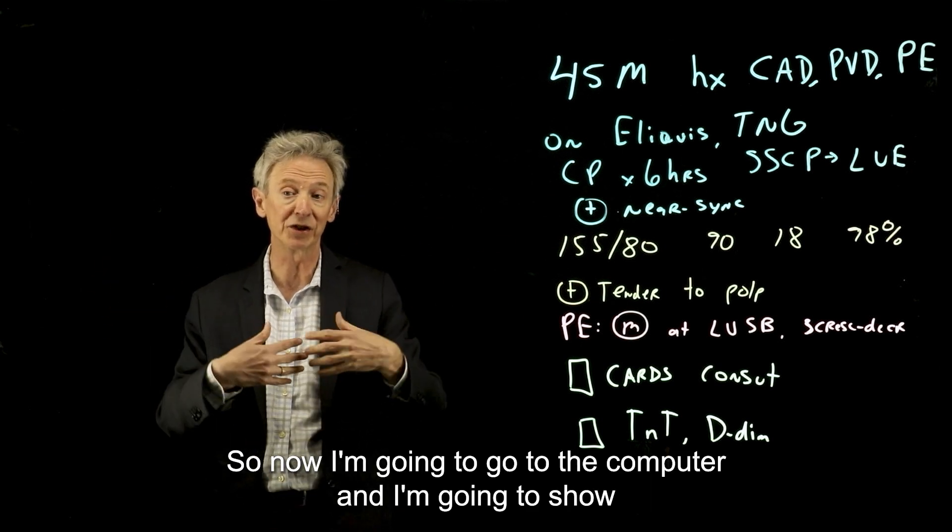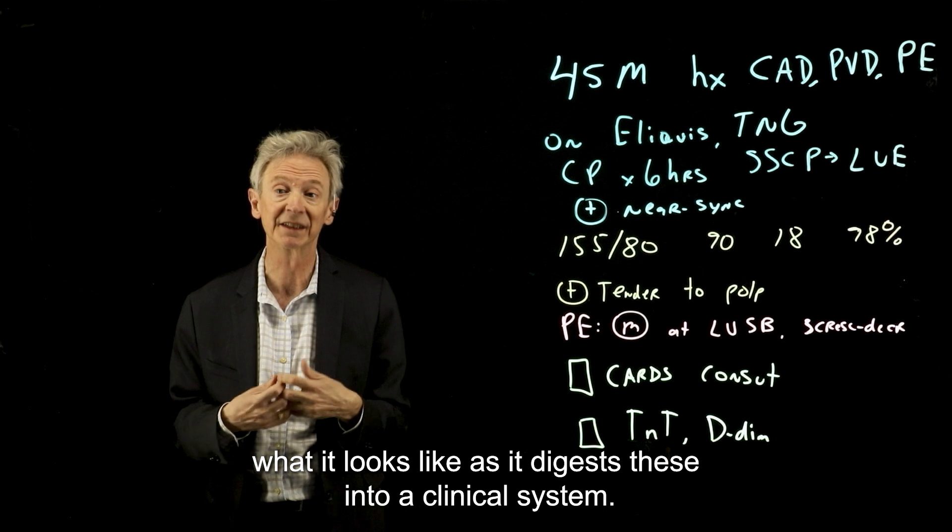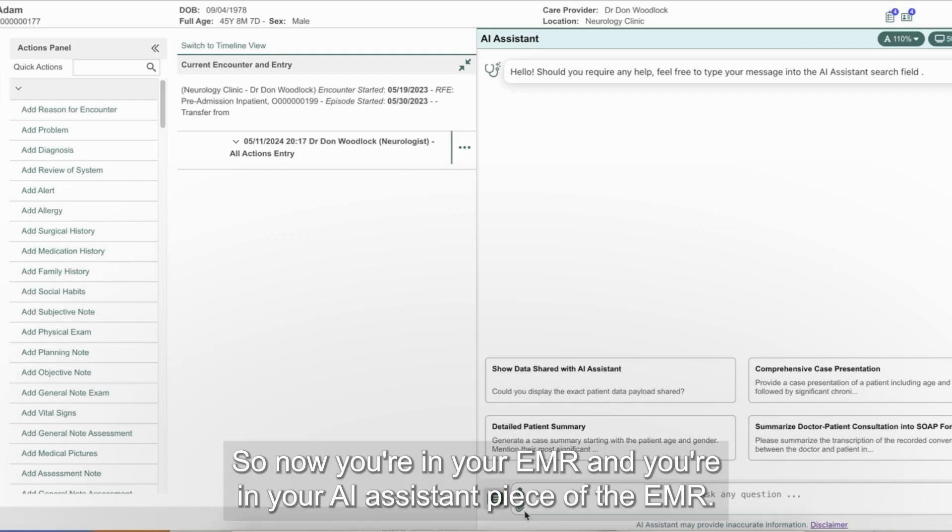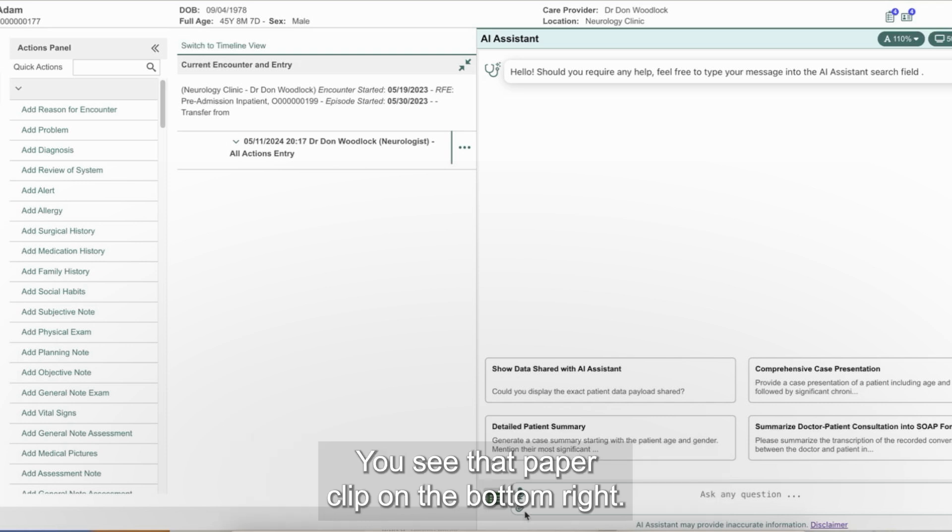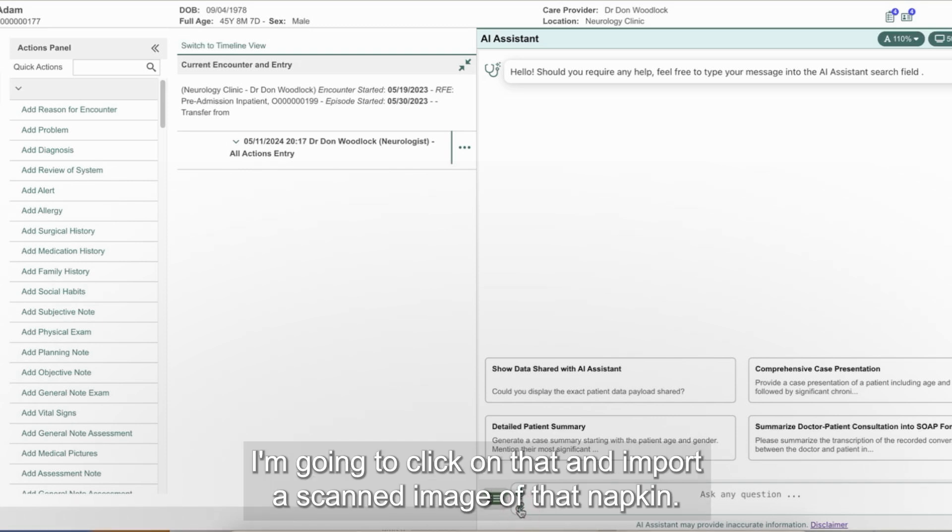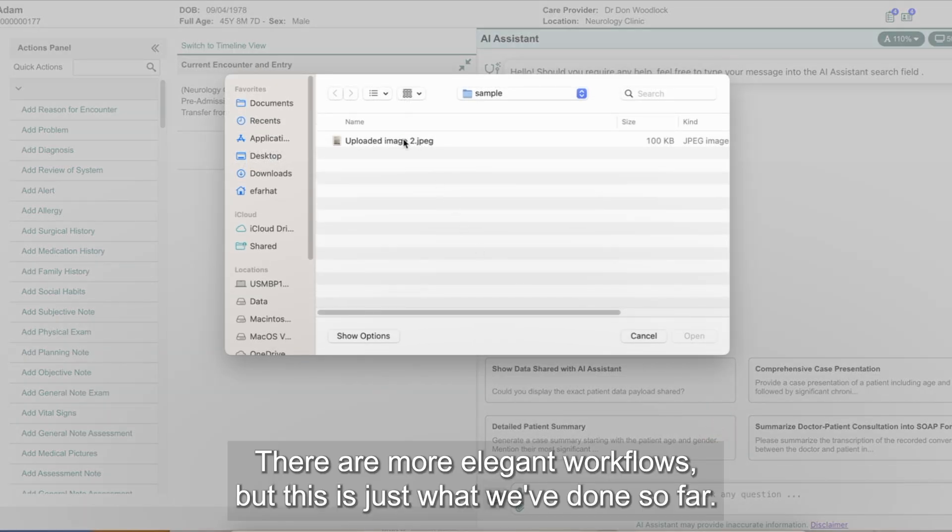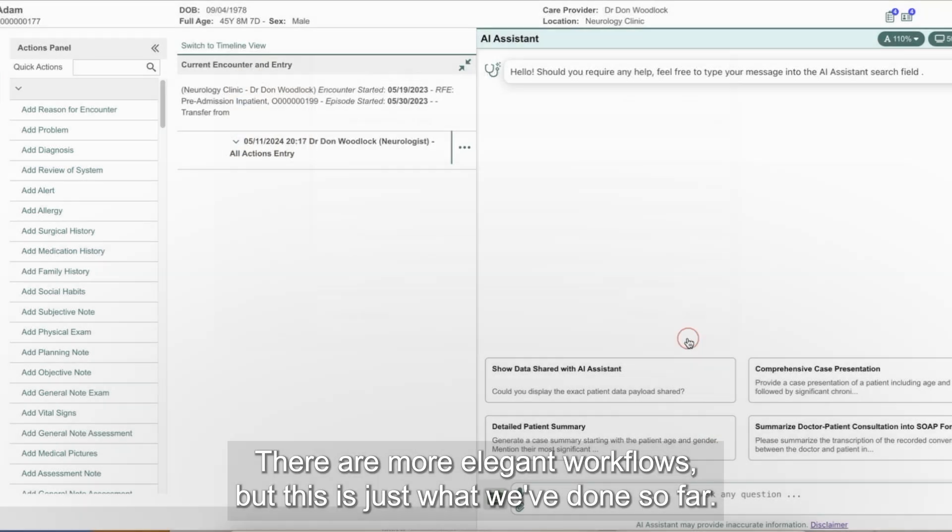So now I'm going to go to the computer and I'm going to show what it looks like as it digests these into a clinical system. So now you're in your EMR and you're in your AI assistant piece of the EMR. You see that paper clip on the bottom right. I'm going to click on that and import a scan image of that napkin. And they're more elegant workflows, but this is just what we've done so far.